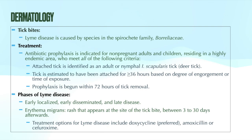Now let's talk about tick bites and Lyme disease. Lyme disease is the most common tick-borne disease in the United States, caused by a species in the spirochete family, Borrelia. Most infections are transmitted to humans by a bite from an ixodid tick in the nymphal stage. Ticks have three stages in their life cycle: larva, nymph, and adult. Lyme disease is most commonly transmitted by ticks in the nymph phase, which are typically most active during late spring and early summer. Nymphal ixodid ticks are tiny — about the size of a poppy seed before feeding.